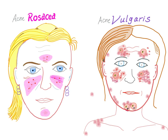Medicosis Perfectionalis presents the differences between acne rosacea and acne vulgaris. We usually refer to acne rosacea as rosacea and to acne vulgaris as acne. So when we say acne in general, we mean acne vulgaris, but when we say rosacea, we mean acne rosacea.